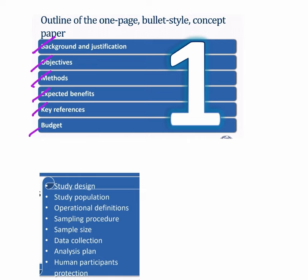In the background section, we should have a minimum of three lines: one for the importance of the topic, then we should tell about what is known and unknown about the topic. Here, you need to prove your strong subject knowledge, but that should not exceed three sentences. Then it automatically ends in the justification or need for the study.